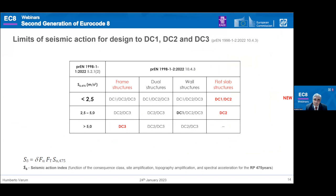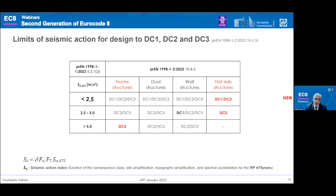Regarding the limits of seismic action for design for different ductility classes: for lower levels of seismic action, design for DC1 is allowed. For intermediate seismic action levels, DC1 design is only allowed for wall structures, while DC2 design for frame structures is allowed only up to an intermediate level. For flat slab structures, design for DC3 is not allowed, and flat slab design is limited to intermediate seismic action demand.